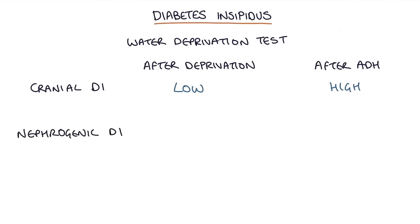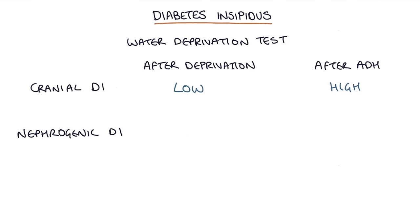In nephrogenic diabetes insipidus the patient is unable to respond to ADH. The kidneys are diluting the urine with excessive water secretion, and they're unable to respond to ADH. Therefore their urine osmolality will be low after the initial eight-hour water deprivation and will remain low after the synthetic ADH is given.